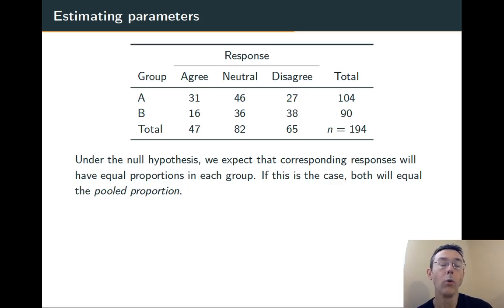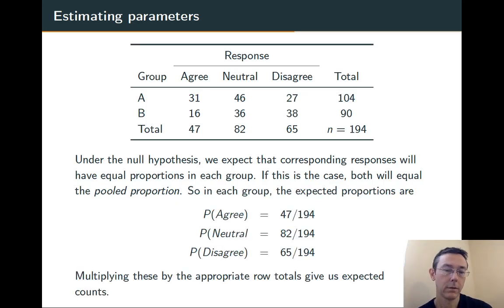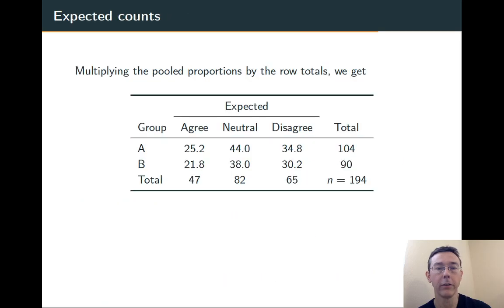So the overall proportion that agree, neutral, disagree. Let's get those pooled proportions. We take the total number that agree and take it over the total number. The total number that are neutral, take it over the total number, and so on. We're going to multiply those by the different row totals, and those are going to give us expected cell counts.